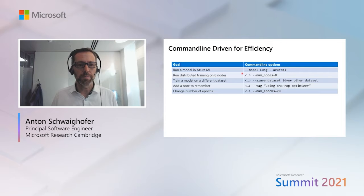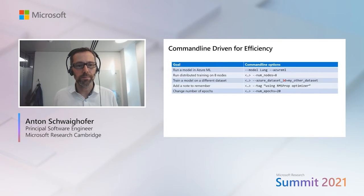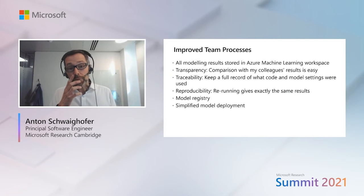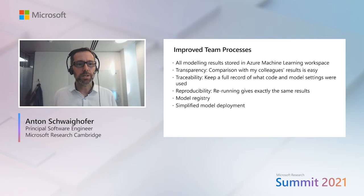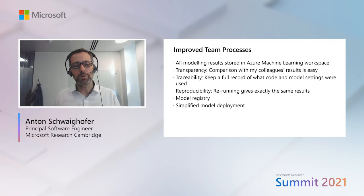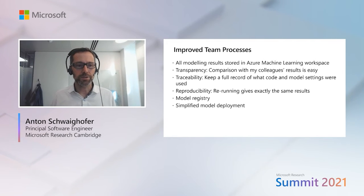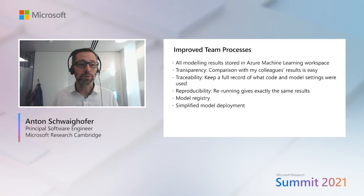All typical operations in model building are available via command line options. For example, if you want to switch to distributed training, you just say --number-of-nodes equals eight — that's it, no additional code required. If you want to train on a slightly different dataset, you just provide another command line argument. This has changed dramatically how we operate as a team, because all of our team's results are no longer siloed in individual virtual machines — everything is in the Azure Machine Learning workspace. We can immediately see who has the best idea to push the model forward, you get full traceability, and model deployment with additional cloud tools is also pretty simple if you've already trained in the cloud.